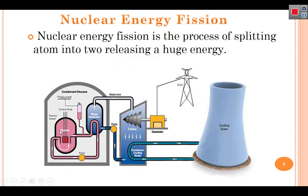The reactor is the place where uranium is used to generate nuclear energy. It creates heat, and this heat turns into steam. The steam drives a turbine to produce electricity, then the steam becomes water. There is a cooling tower that cools down this hot water.